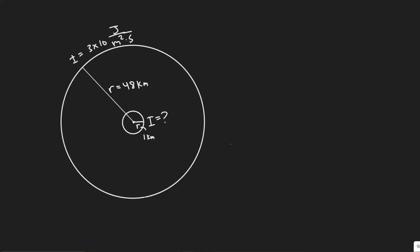Okay, so in this problem we're told the intensity of an earthquake wave passing through the earth is measured to be 3 times 10 to the 6 joules per meter squared times seconds at a distance of 48 kilometers from the source. Part A, what was its intensity when it passed a point only 1 kilometer from the source? And part B, at what rate did the energy pass through an area of 2 meters squared at 1 kilometer?